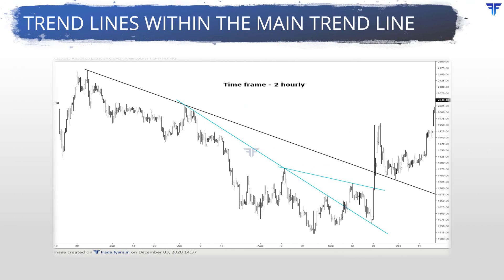This is the two-hourly timeframe chart. Notice the two internal downtrend lines within the main downtrend line. After the main downtrend line was drawn, the price decline accelerated, necessitating another trendline to reflect the price decline. Going forward, the price rose once it moved above each of the two internal trendlines. Meanwhile, the break above the main downtrend line signaled a reversal in trend from down to up.